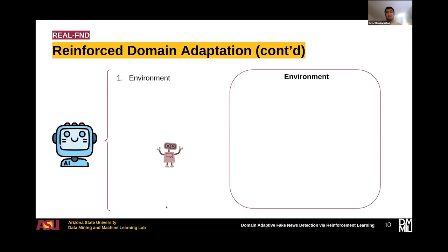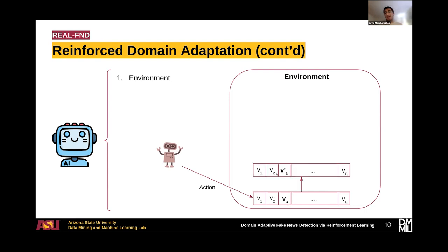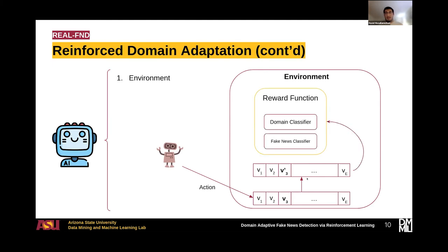The environment is where the agent keeps interacting with. Through this interaction, the agent gains experiences, and using those experiences it learns how to remove the domain-dependent features from the news representations. In our case, the agent chooses an action by changing one element in the news representation to another value. Having the modified news representation, we pass it through a reward function that has a domain classifier and a fake news classifier to determine how useful and domain-independent the news representation is. It computes the reward value and passes the reward value and the current state to the agent as an experience. Using this experience, the agent learns to modify the news representation to make it domain-adaptive.